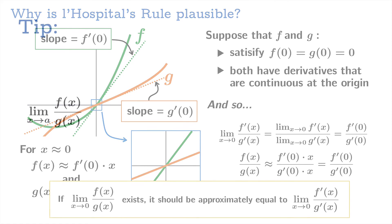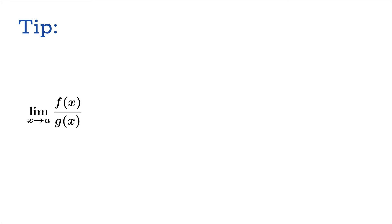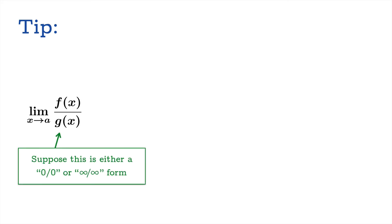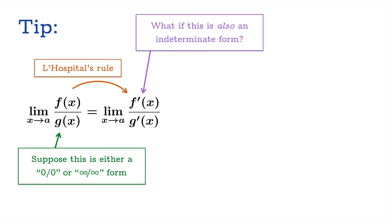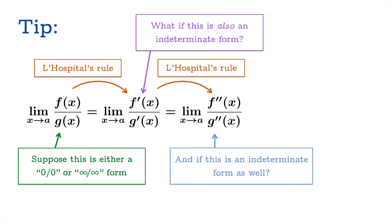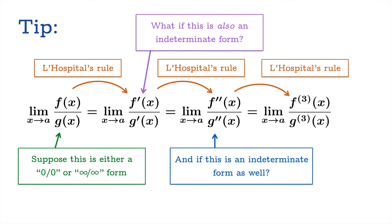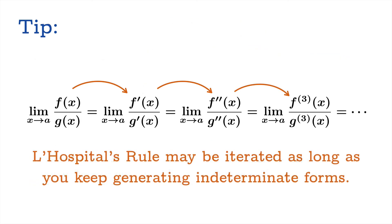Here's a tip. Suppose you're looking at an indeterminate form and you apply L'Hôpital's rule and discover that the new limit is also an indeterminate form. Well, you can apply L'Hôpital's rule again. And if that is indeterminate as well, apply L'Hôpital's rule again. In fact, L'Hôpital's rule may be iterated as long as you keep generating indeterminate forms.